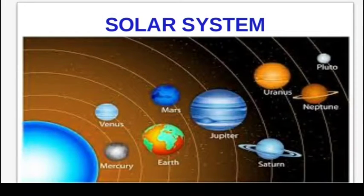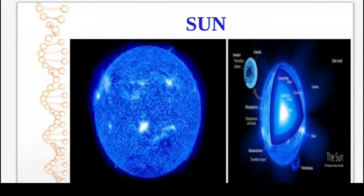The solar system consists of the sun, eight planets, their satellites, and thousands of other smaller heavenly bodies such as asteroids, comets, and meteors. Now we are talking about the solar system.